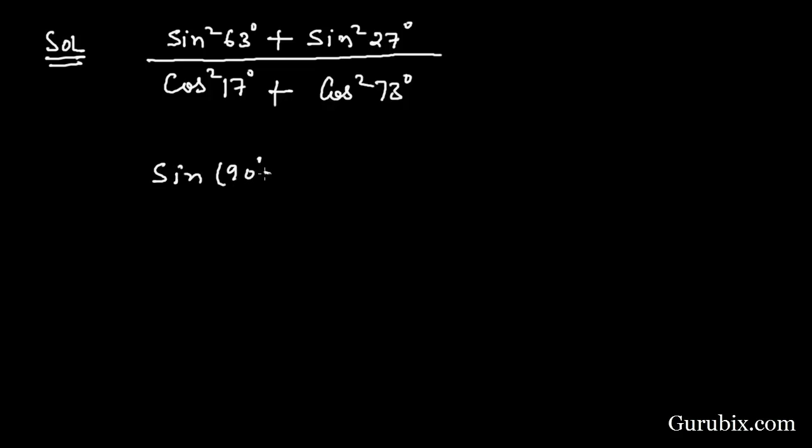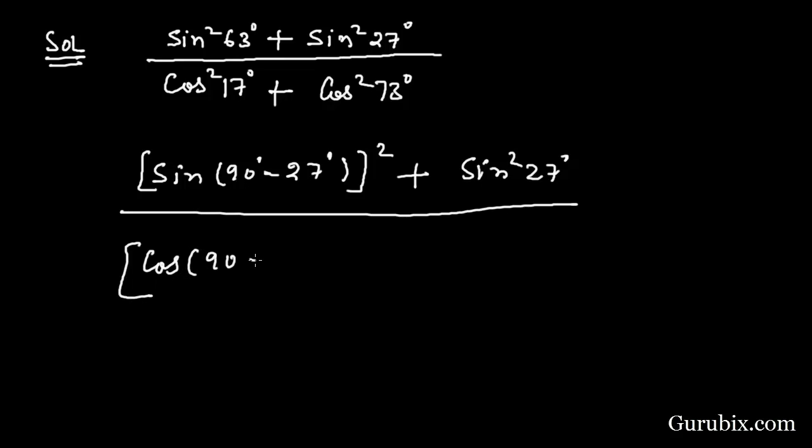Here we have sine(90° - 27°) squared plus sine²27° over cos(90° - 73°) plus cos²73°.